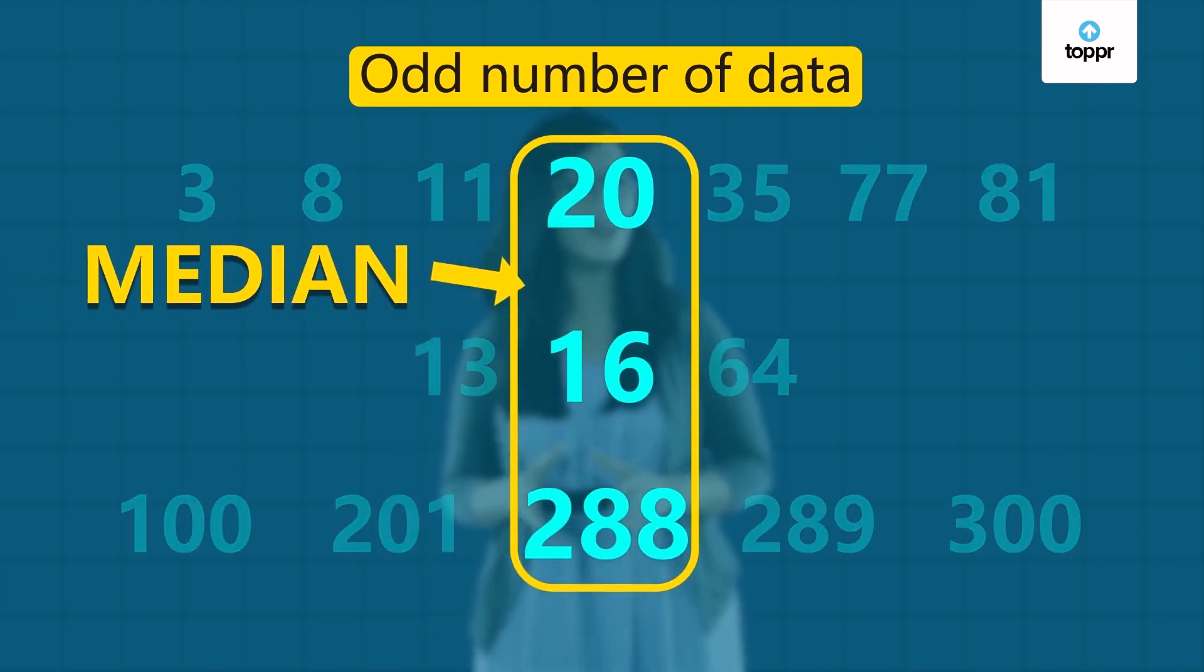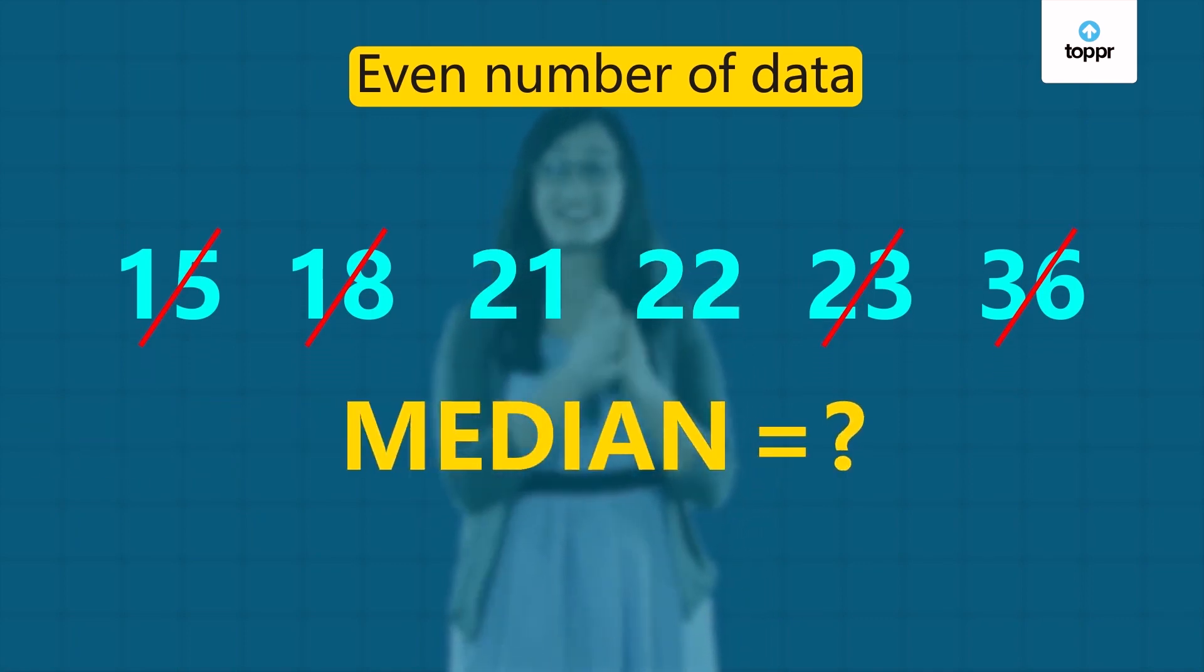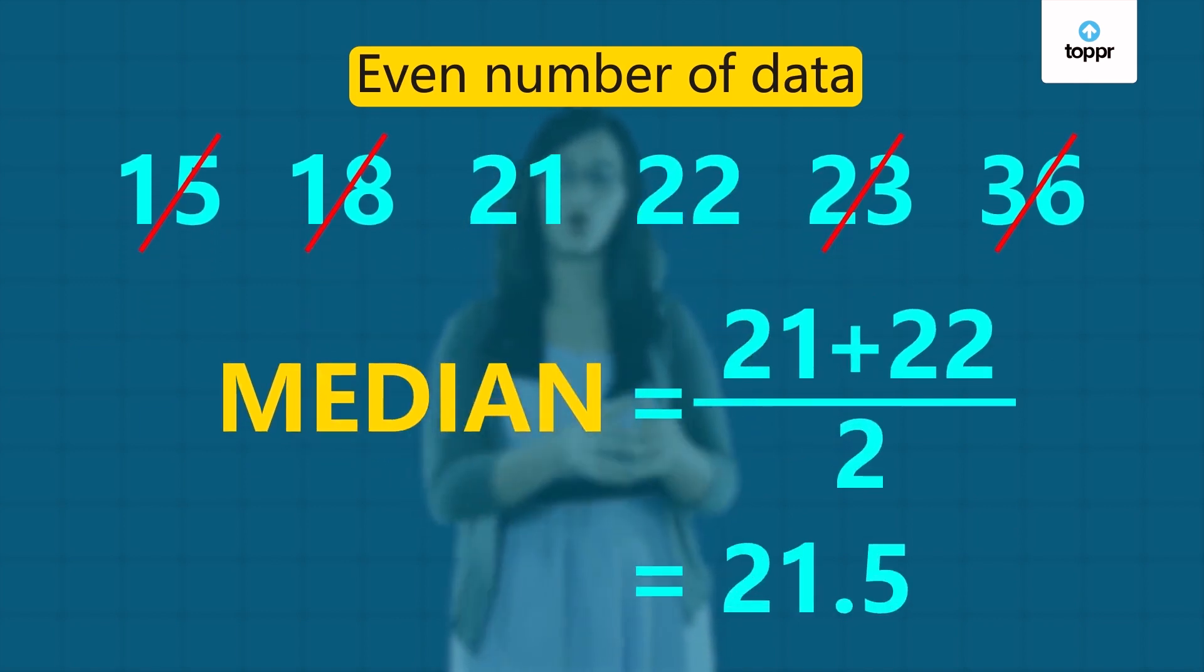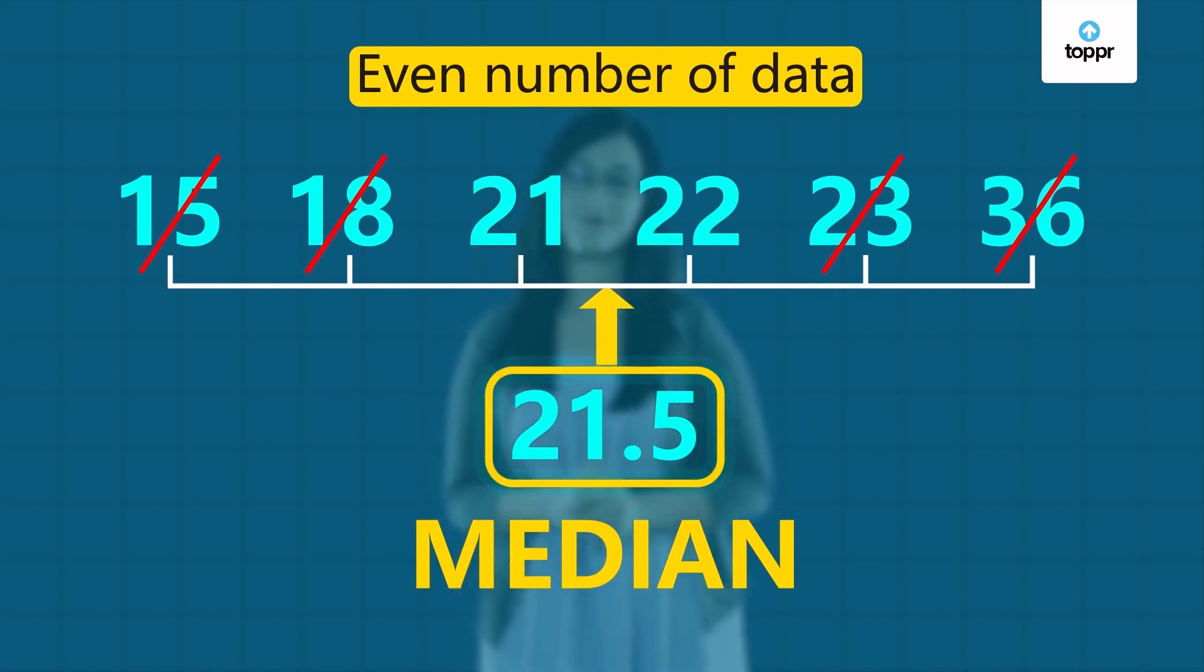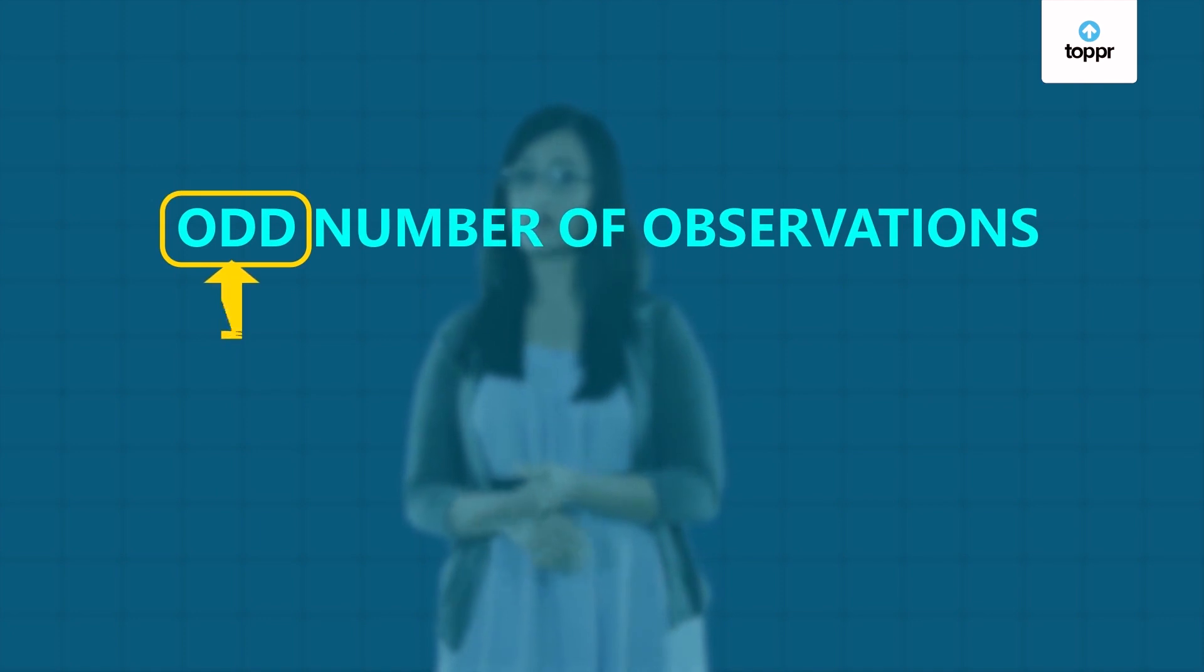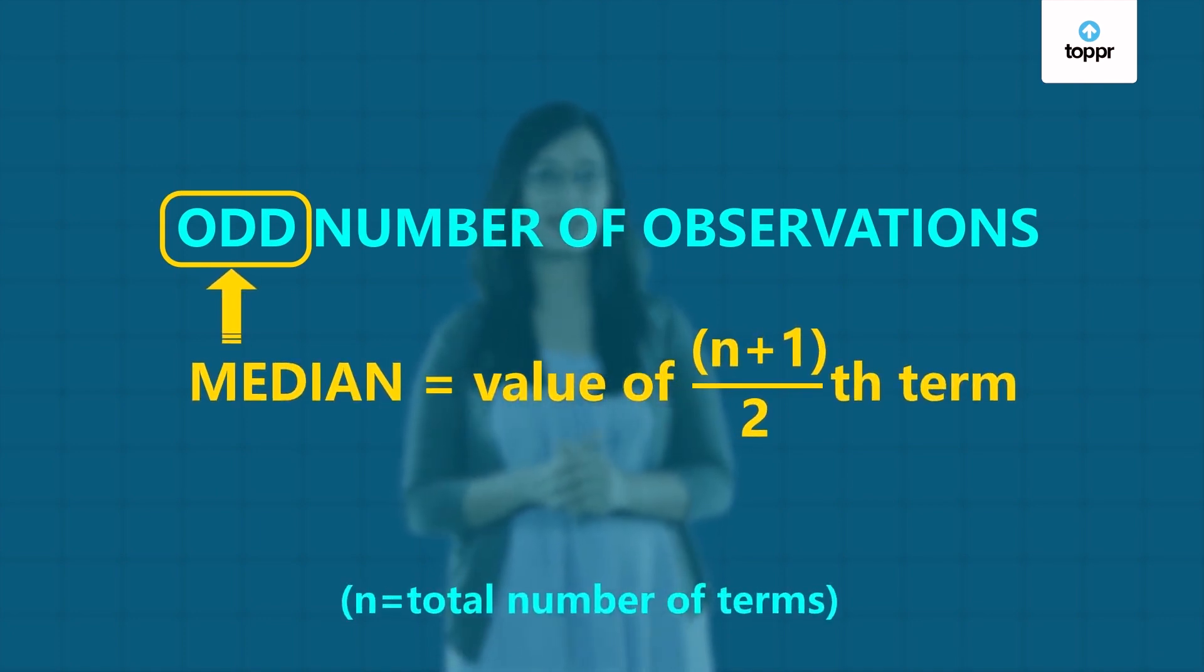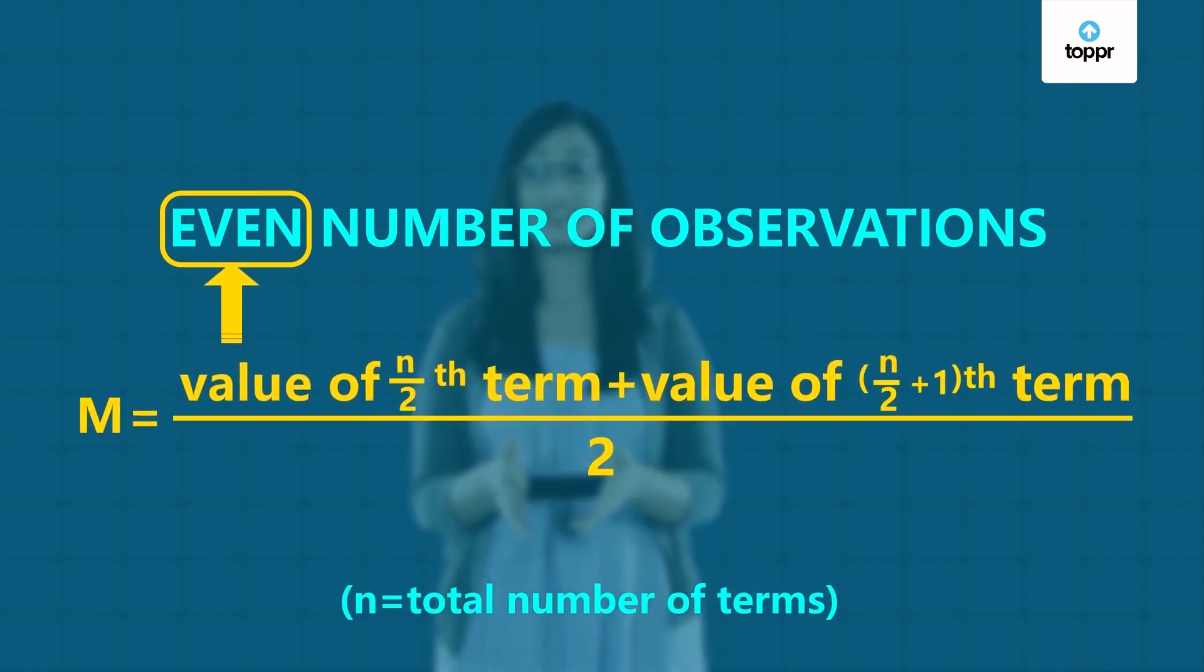But what if you have an even number of values? To find the median of an even set of data, we take the two middle values and find their average or mean. This will then be the median of the data set. So mathematically, when the number of observations is odd, the median is the middle-most value, and when the number of observations is even, the median is given by the average of the two middle values.